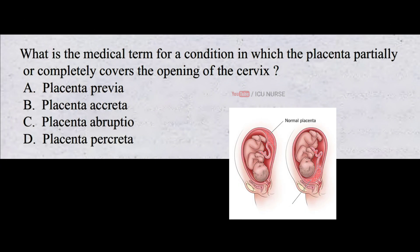What is the medical term for a condition in which the placenta partially or completely covers the opening of the cervix? A. Placenta previa. B. Placenta accreta. C. Placenta abruptio. D. Placenta percreta. And the correct answer is A. Placenta previa.